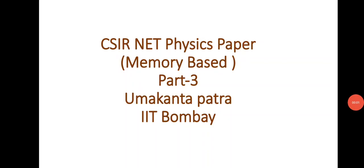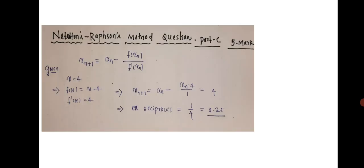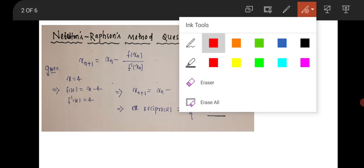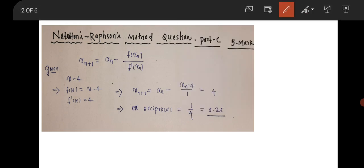Hi everyone, welcome to my channel. Here I am with a few questions from the CSR NET physical science paper. Let's have a discussion on the questions. This first question is from Newton's Optimization Method, carrying five marks in Part C.